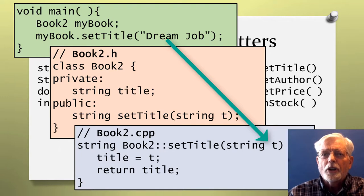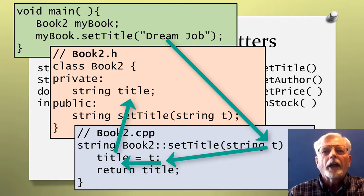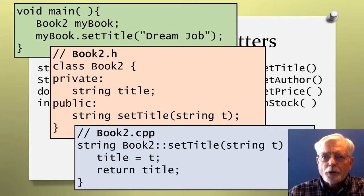The first line in the method is title equal t semicolon, which copies the string dreamjob, which is in the variable t, into the private member data variable named title.